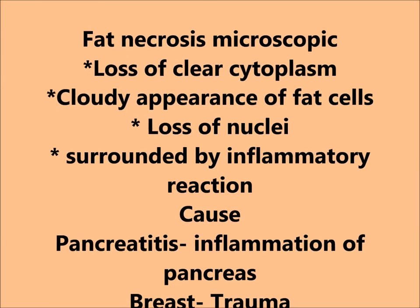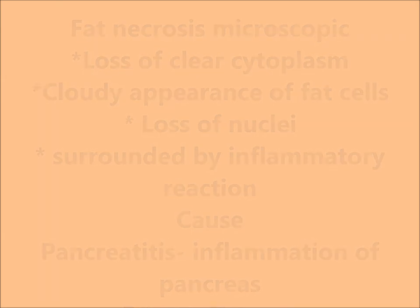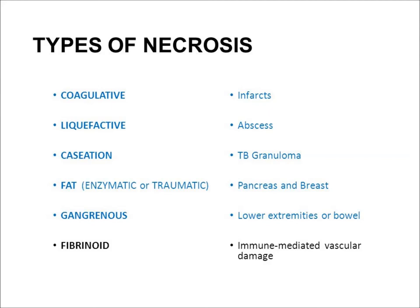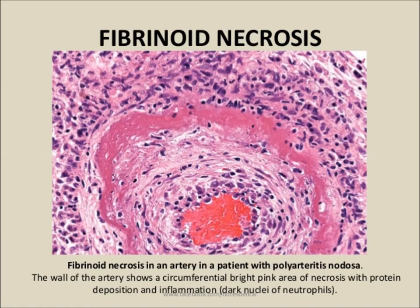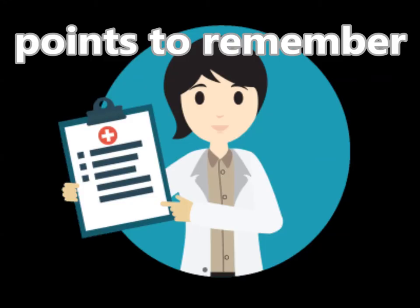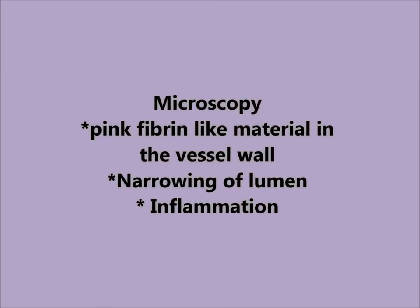Fibrinoid necrosis occurs usually in the vessel wall. There is exudation of pink fibrinoid material in the vessel wall, narrowing of the lumen, and surrounding leukocytes. You can appreciate narrowing of the lumen due to thickening of the wall, exudation of pink material, and surrounding leukocytes. Points to remember: it is immune-mediated, usually seen in the vessel wall, with narrowing of the lumen and surrounding inflammation.